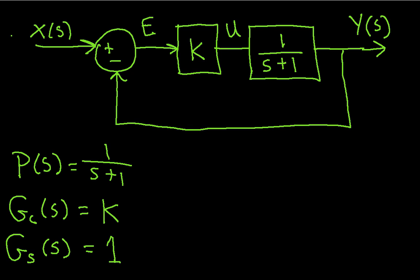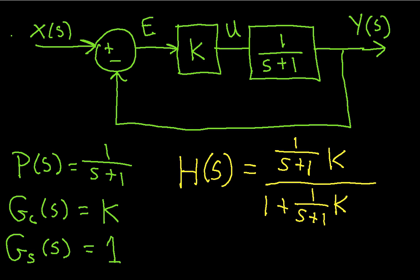With these values, the overall transfer function of the system, h of s, is equal to p of s, which is 1 over s plus 1, times gc of s, which is k, over 1 plus p of s, which is 1 over s plus 1, gc of s, which is k, and g sub s of s, which is 1.